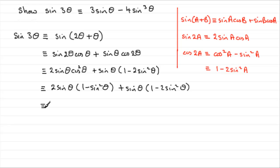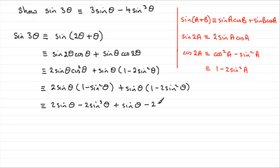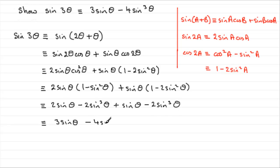Now we multiply out all the brackets: 2 sine θ times 1 is 2 sine θ; 2 sine θ times minus sine squared θ is minus 2 sine cubed θ. Then expanding the second bracket: sine θ times 1 is sine θ, and sine θ times minus 2 sine squared θ is minus 2 sine cubed θ. So we've got it all in terms of sine. We've got 2 sine θ plus sine θ, giving 3 sine θ, and minus 2 sine cubed θ minus another 2 sine cubed θ, giving minus 4 sine cubed θ — exactly what we needed to prove.